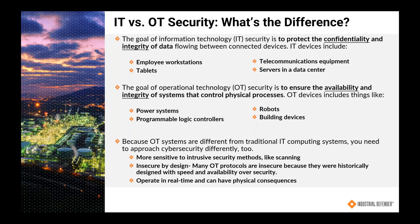In OT systems, however, the situation is different. Instead of delivering email or serving up webpages, OT systems deliver functions like implementing the power grid, refining petroleum, running rail systems, and manufacturing cars. They automate things like robots, motors, reactors, and even less obvious but very important systems such as cooling and heating systems for a large facility — say a hospital or a manufacturing facility.